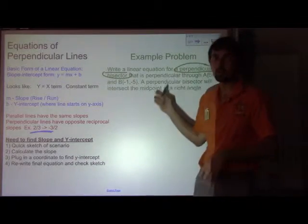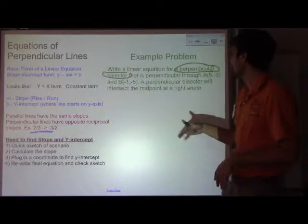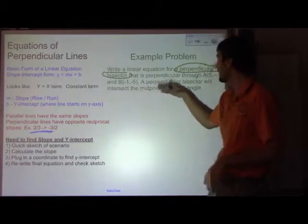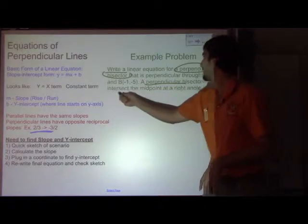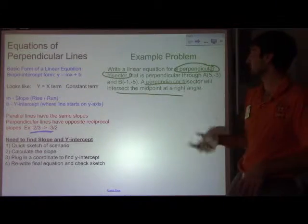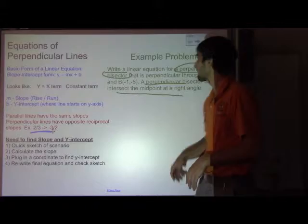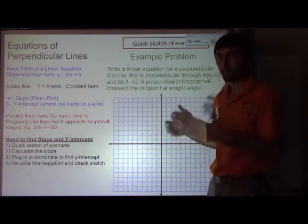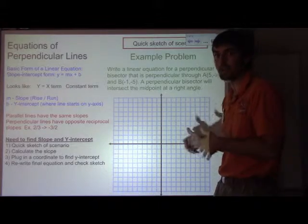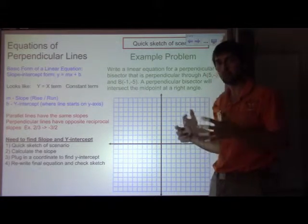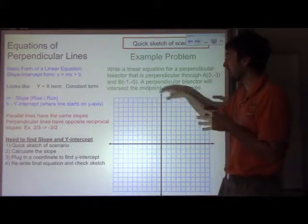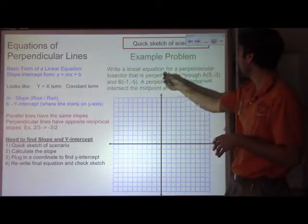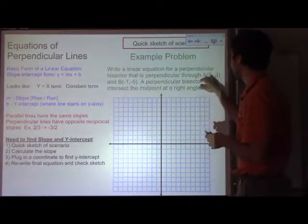A perpendicular bisector means it cuts the line in half at a right angle. This is more of a geometry type question that is perpendicular through A (5, -3) and B (-1, -5). It will intersect the midpoint at a right angle. So the first thing I would definitely do, as always, when you're given points, you should always sketch them. Your sketches don't have to be beautiful, but they do need to have the values, the numbers, in the problem.